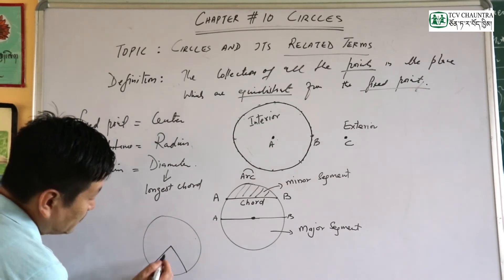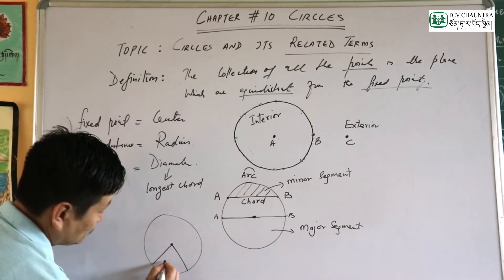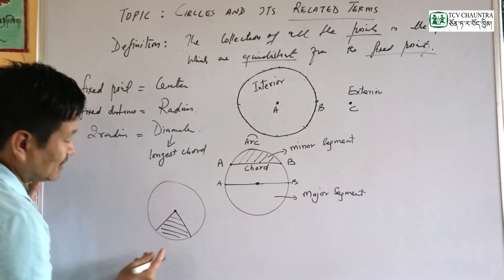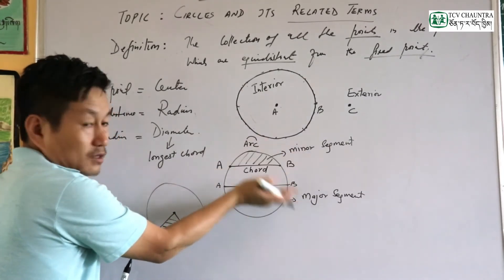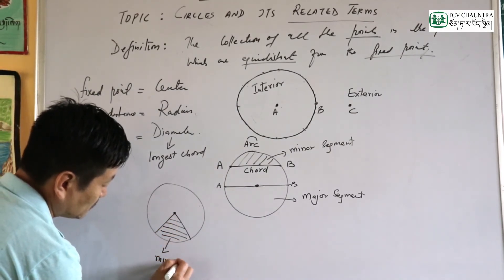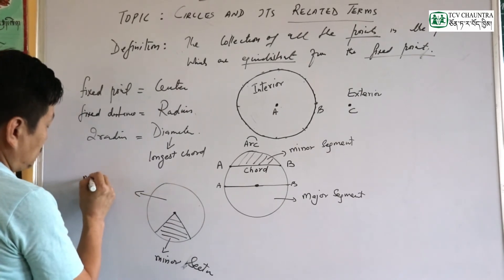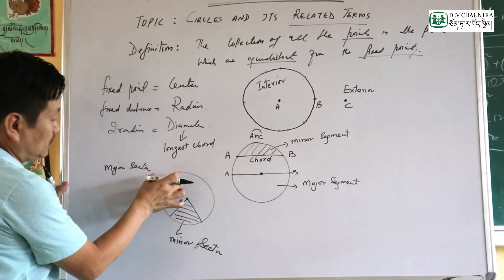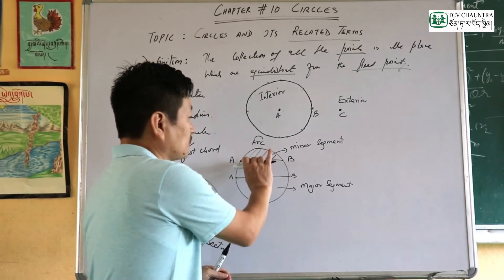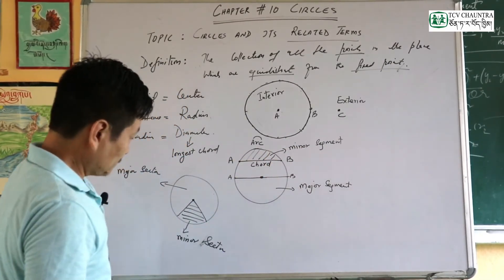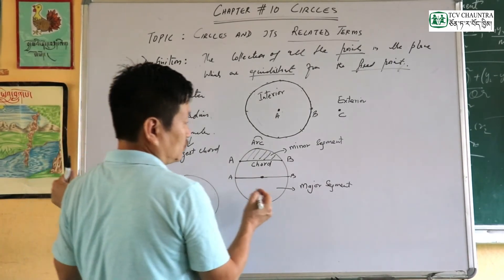Around the center, if you take the radius and measure the arc, you get sections of the circle. These sections relate to the major and minor arcs. When a chord divides the circle, the larger arc is the major arc and the smaller arc is the minor arc.